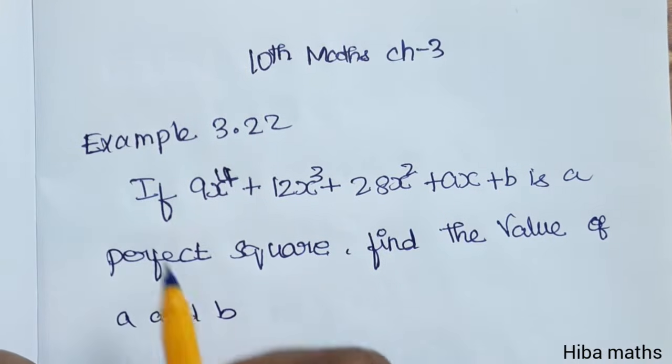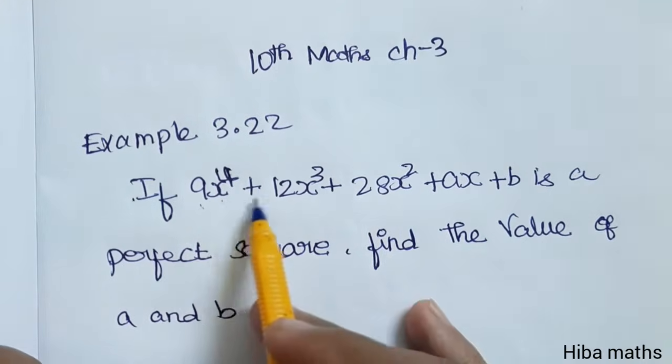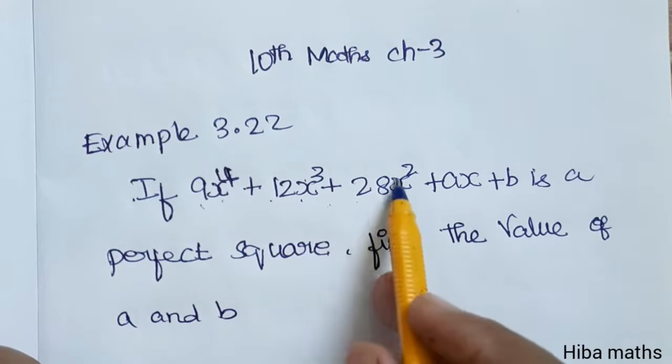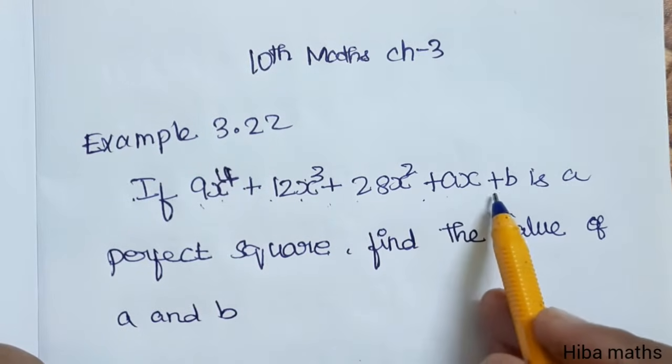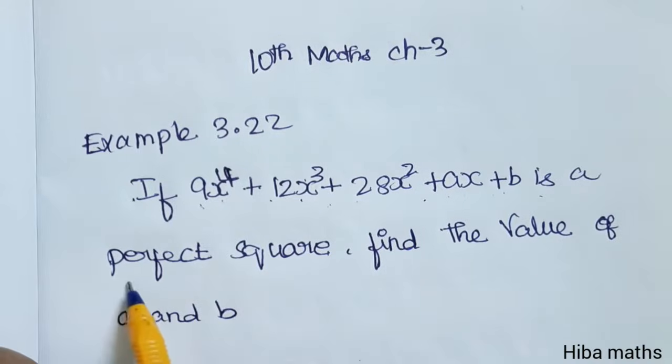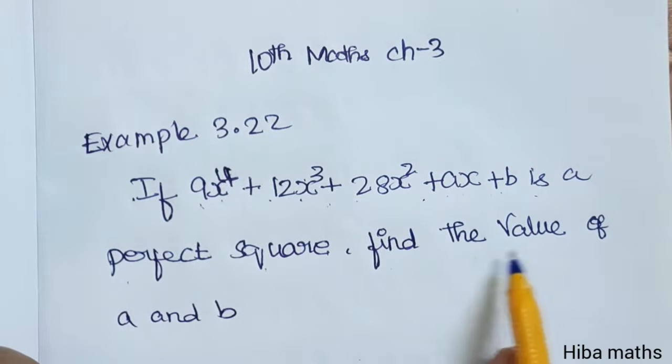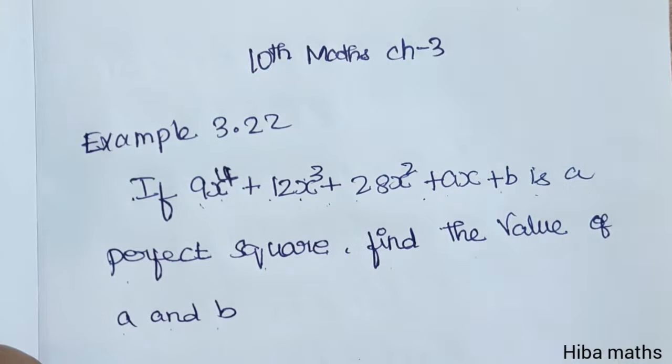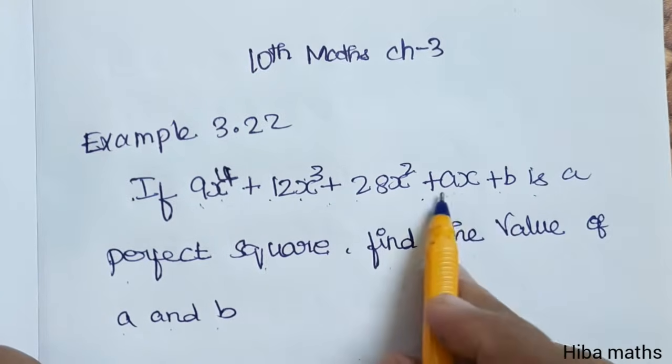Example 3.22: If 9x⁴ + 12x³ + 28x² + ax + b is a perfect square, find the values of a and b. We have a term, there are two unknowns.